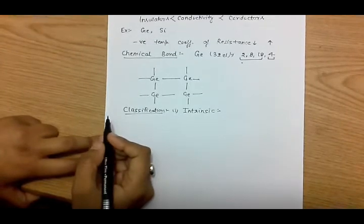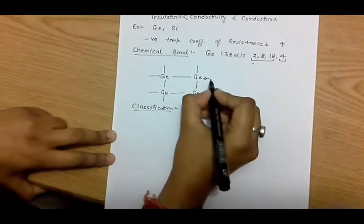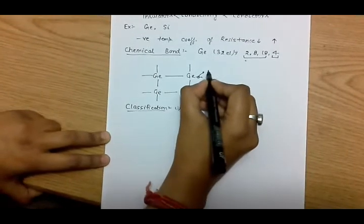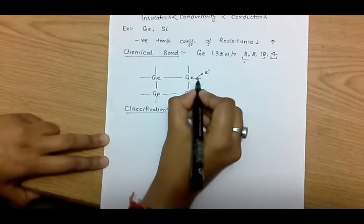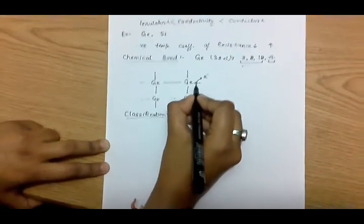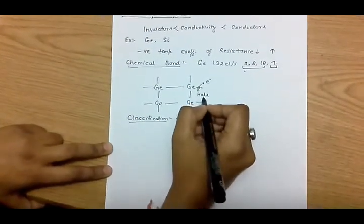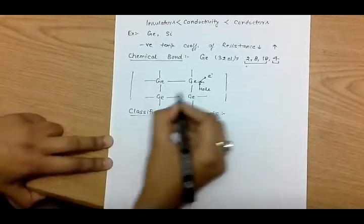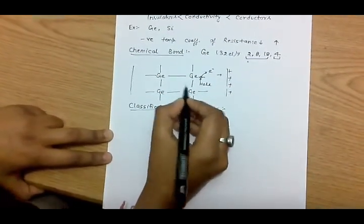In intrinsic semiconductors, even at room temperature some electrons are capable of getting sufficient energy to break the covalent bond and become free. The vacant space left behind from which the electron is removed is known as a hole. These free electrons and holes are responsible for the conductivity of the material. When placed in an electric field, electrons move towards the positive electrode and hole movement also gives rise to conductivity.